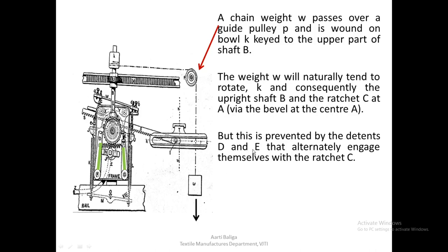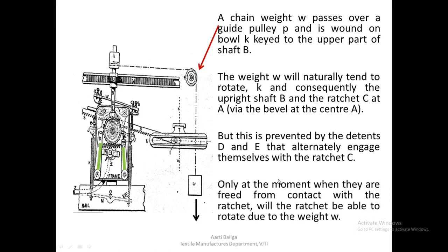Detents D and E are alternately engaging with the ratchet. Both alternately hold the ratchet and will not allow it to rotate even if the weight is trying to rotate it. Only at the moment they are freed — for instance if E were to be disengaged — at that instant only the ratchet will turn because of this weight. Otherwise it is held securely and not allowed to rotate.